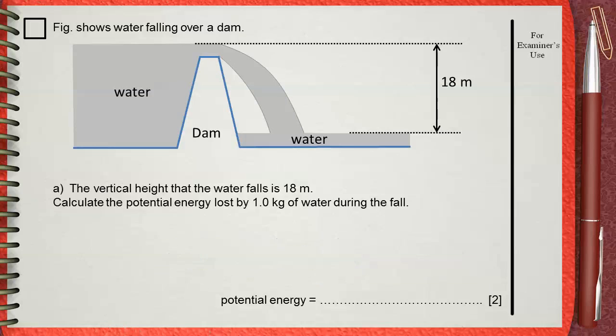Now let's see what are the givens. You have 18 meters which is the height. You are also given the mass which is 1 kg.